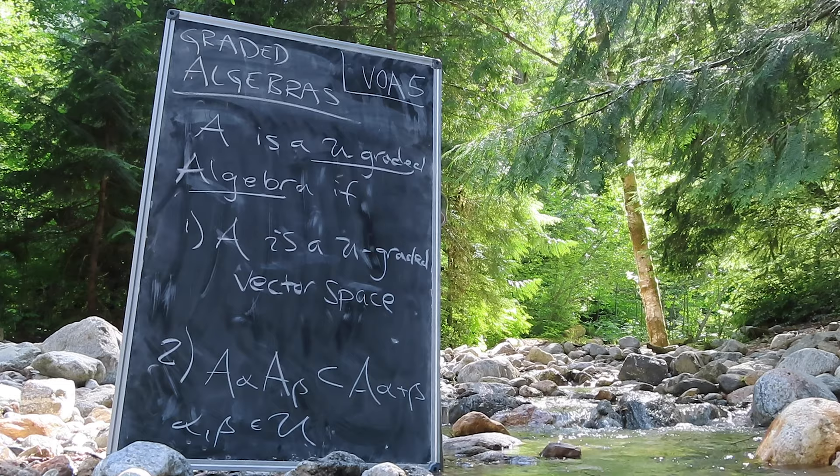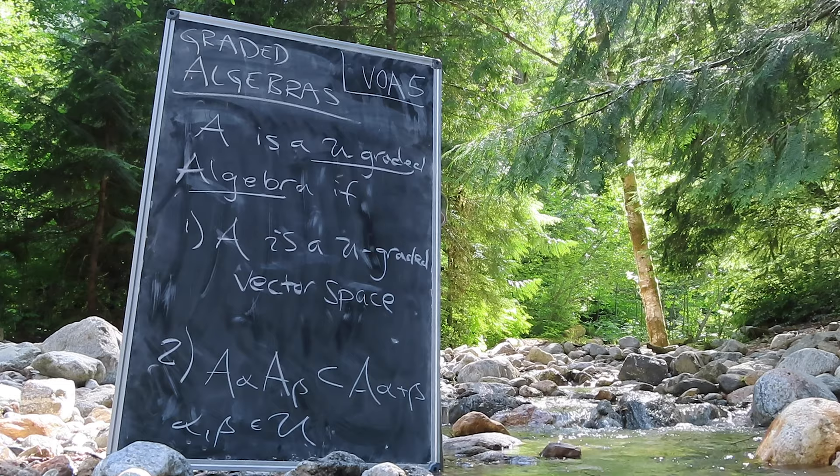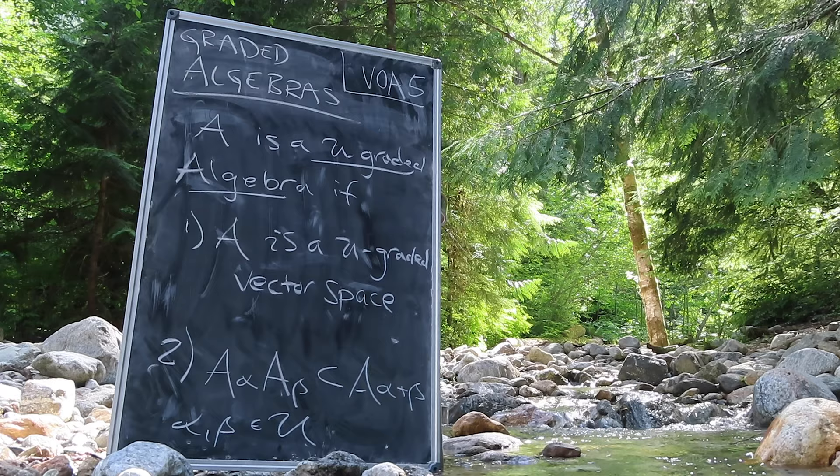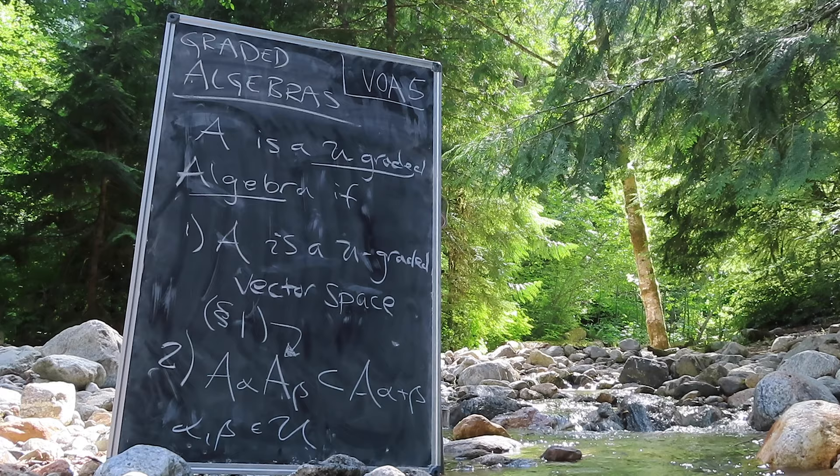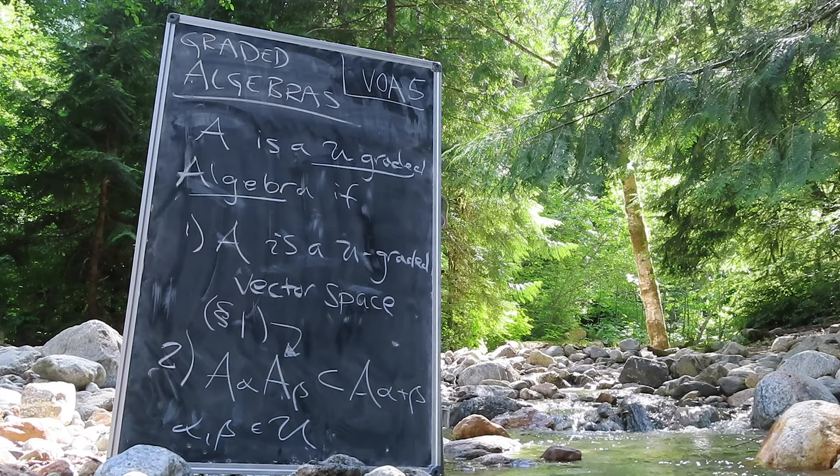We say that the algebra A is U-graded if two conditions are met. First, A is U-graded as a vector space. Second, recalling our notation for the product of subalgebras from section 1, A sub alpha times A sub beta must be contained in A sub alpha plus beta, for all alpha and beta in U.